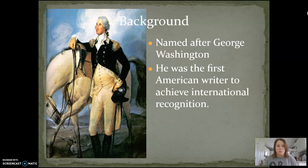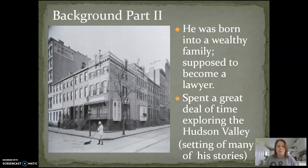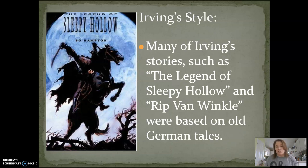So, Washington Irving was named after George Washington, and he was one of the first American writers to achieve international recognition. His impact on American literature was quite profound. He was born into a wealthy family and was supposed to become a lawyer, but he had a very active imagination and spent a great deal of time exploring the Hudson Valley in New York, which became the setting of many of his stories. Many of his stories are based in other legends — you might be familiar with the Legend of Sleepy Hollow and Rip Van Winkle. These were both based on old German tales, and Irving took these old tales and made them his own. This was common during the Romantic period: making the past new again.